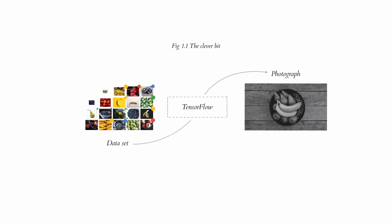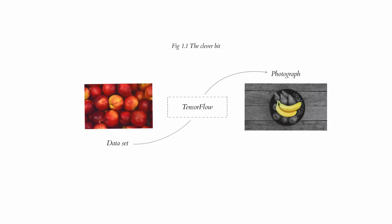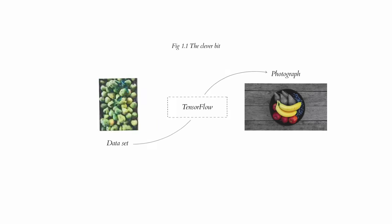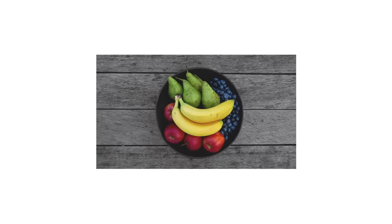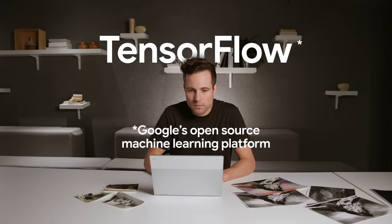Step by step, it learns how to add color to black and white photos. Eventually, you end up with something pretty accurate. I tried to build the shortest algorithm I could using TensorFlow, Google's open source machine learning platform.